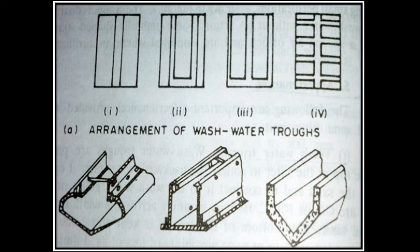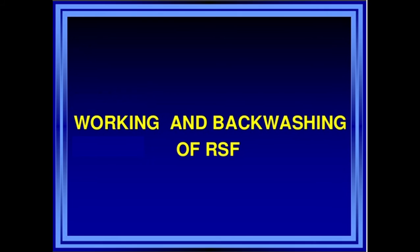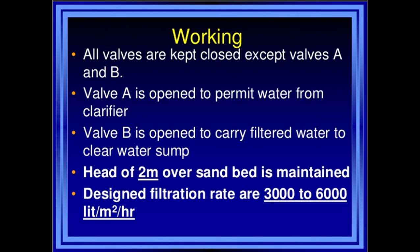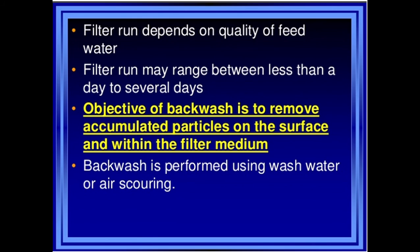Now we look at the actual working and operation of the rapid sand filter. There are diagrams showing operation during filtration and operation during cleaning. During normal filtration, all valves are kept closed except valves A and B. Valve A is opened to permit water from the clarifier, while valve B is opened to carry filtered water to the clear water sump. A head of 2 meters over the sand bed is maintained.